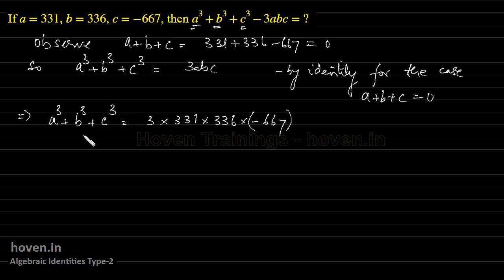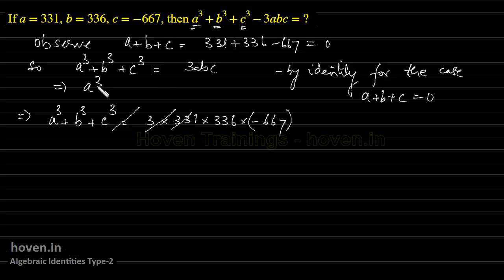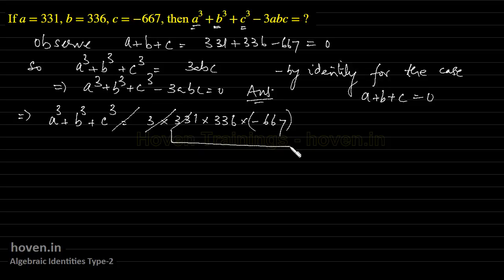But the question asks for a cubed plus b cubed plus c cubed minus 3abc. We already know that if a plus b plus c is 0, then a cubed plus b cubed plus c cubed equals 3abc. So a cubed plus b cubed plus c cubed minus 3abc is equal to 0. That is the answer — obviously 0 in this case.